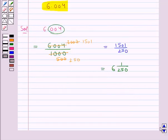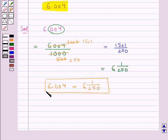So the given decimal 6.004 is converted into a mixed fraction as 6 1 upon 250. So this is our final answer. This completes the session. Hope we have understood the solution of this question.